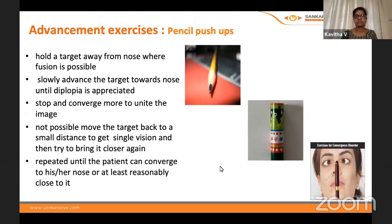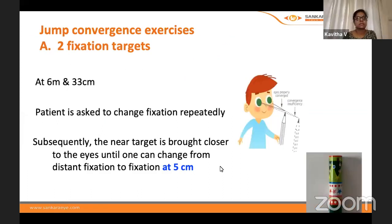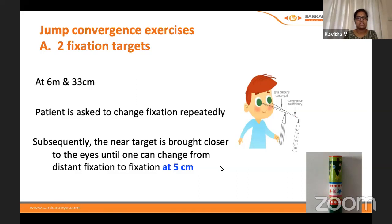Jump convergence exercises involve jumping fixation between two targets — one at near (33 cm) and one at 6 meters. You repeatedly and actively shift fixation between near and far. The near target is gradually brought closer until one can change from distant fixation to fixation at 5 cm — close to the normal range of 6 cm — indicating the target has been achieved.